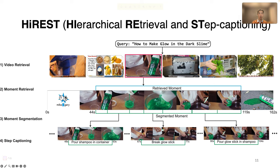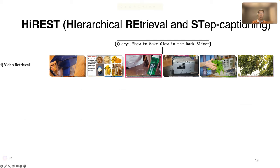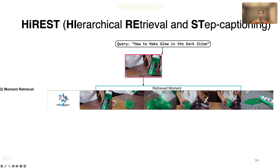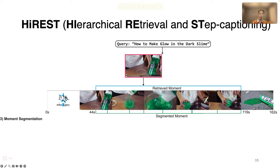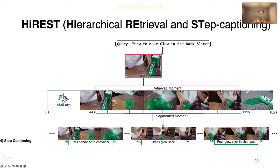Using these annotations, we benchmark four tasks: video retrieval, moment retrieval, moment segmentation, and step captioning. In the video retrieval task, models have to identify a video that is most relevant to a given text query. In the moment retrieval task, models have to select the relevant span of the video by trimming the parts irrelevant to the text query. In the moment segmentation task, models have to break down the relevant portion into several instructional steps and identify the start and end boundaries of each step. Finally, in the step captioning task, models have to generate step captions of the instructional steps.